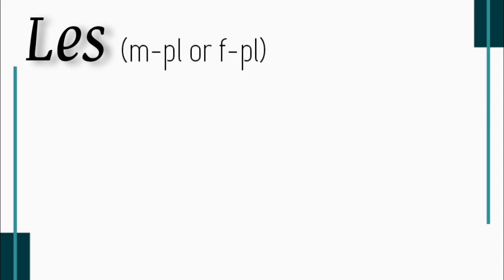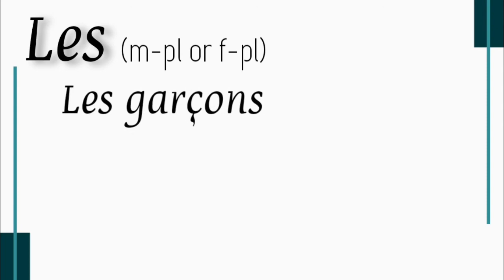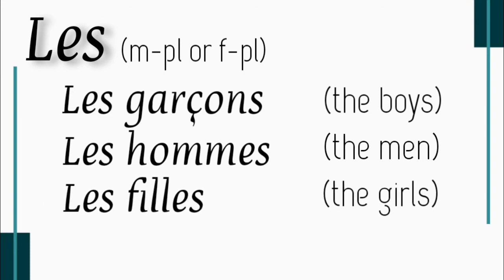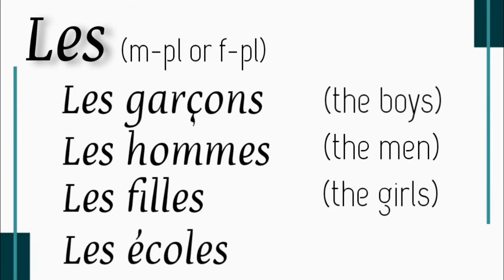Les is used with masculine plural or feminine plural nouns. If the noun is plural, whether it starts with a vowel or consonant, whether it's masculine or feminine — all these categories use les. For example: les garçons — the boys. Les hommes — the men. Even though 'hommes' starts with a vowel, because it is plural we use les. Les filles — the girls. Les écoles — the schools. Even though 'écoles' starts with a vowel, because it is plural, we use les. I hope definite articles are also clear.